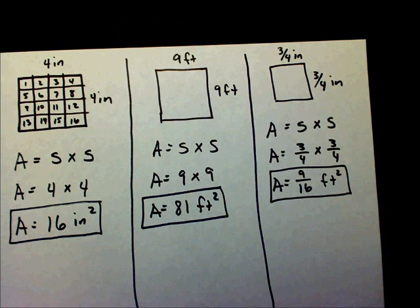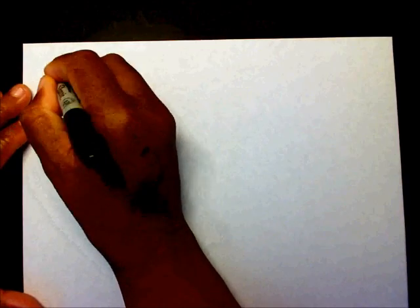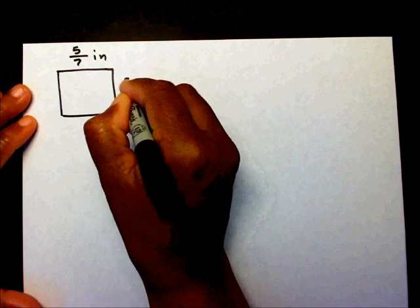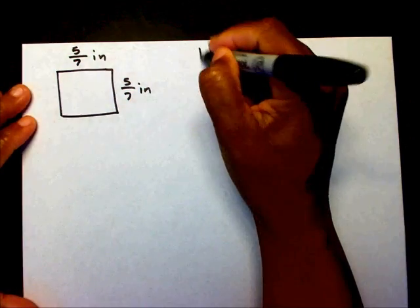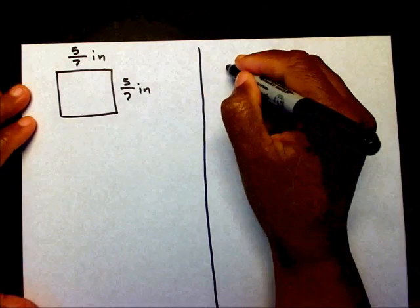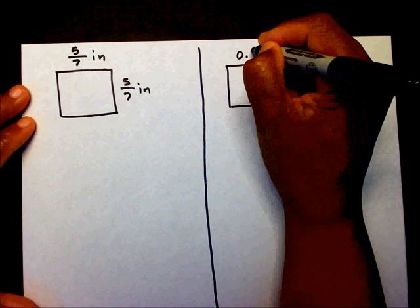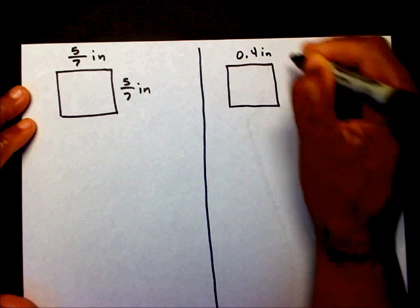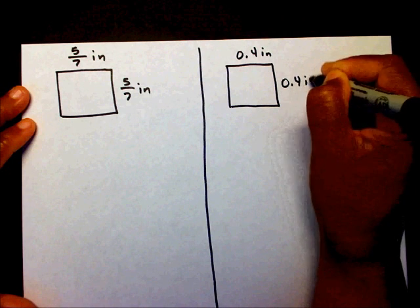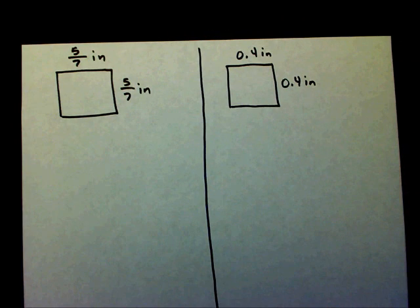Now I'd like for you to work two. This side is five-sevenths inches, and this side is five-sevenths inches. And over here, let's say this is zero-point-four inches. This is zero-point-four inches. If you'll pause, please pause the video and find the area of those two squares. Thank you.